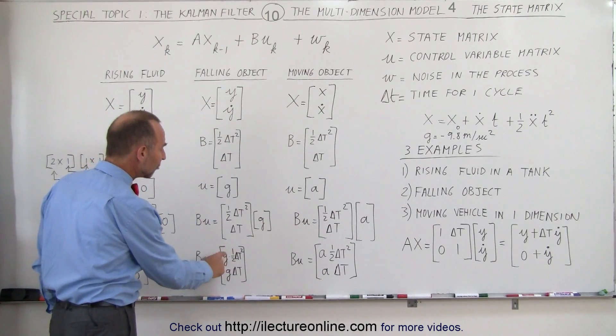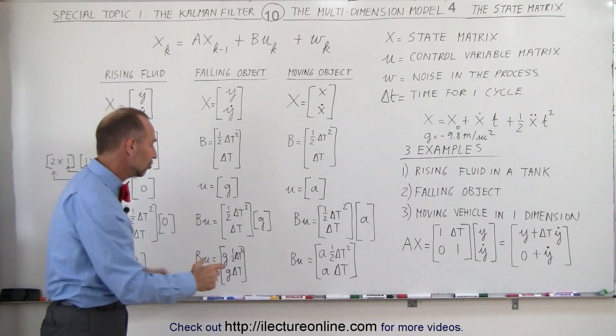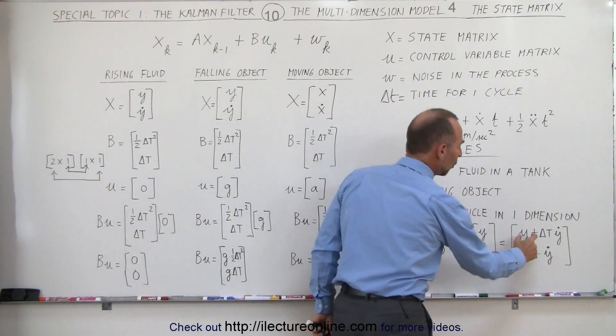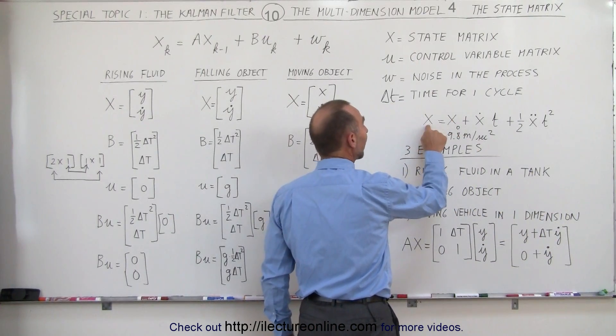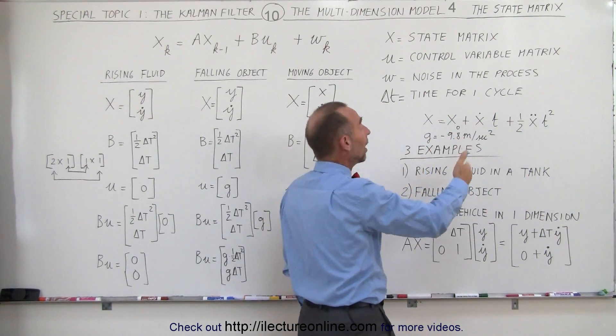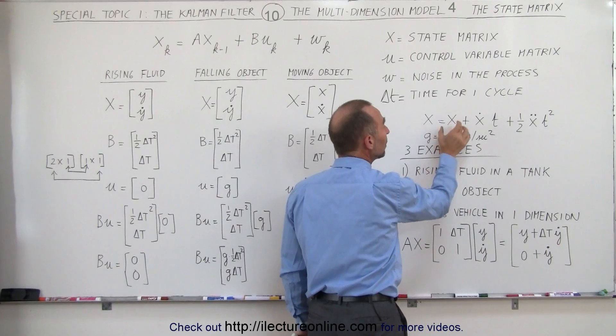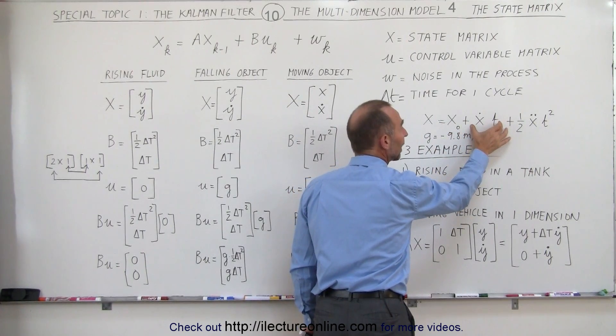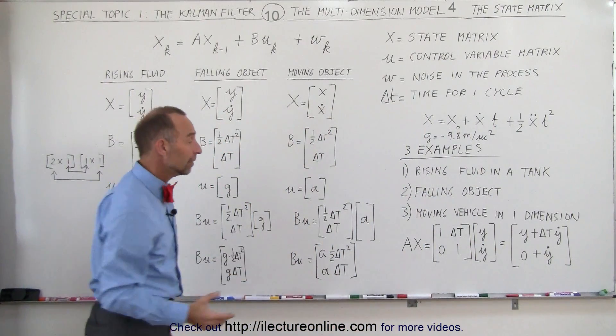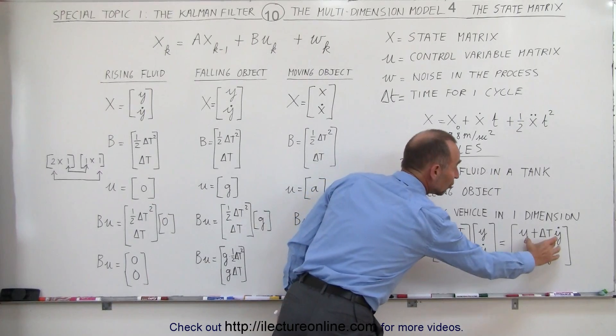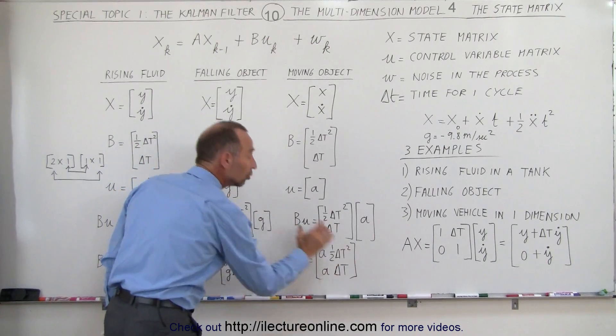If we then add 1 half g times delta t squared, which is an additional change in the position caused by acceleration, if we add that to the y plus delta t times y dot, which is the velocity in the y direction, then we can see that the position will be equal to the old position, plus the change caused by the velocity, plus the change caused by the acceleration. That then becomes apparent that we multiply A times x, we get the change in position due to the velocity, and when we multiply B times U, we get the change in position due to the acceleration.